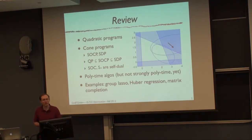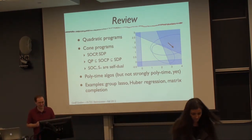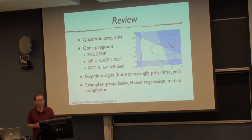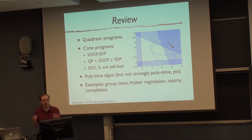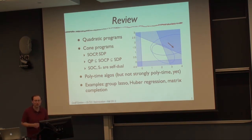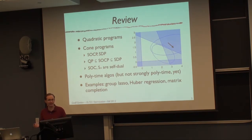We'll start with a bit of review. We talked about quadratic programs, which minimize a quadratic objective subject to linear equality and inequality constraints. We talked about cone programs, which minimize a linear function subject to cone constraints — AX plus B in some cone, or X itself in some cone. In particular, we talked about two types of cone programs: semi-definite programs and second-order cone programs.